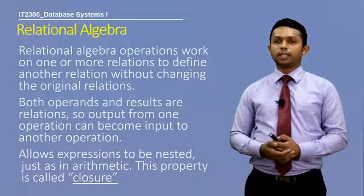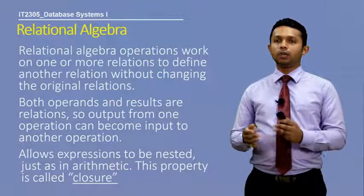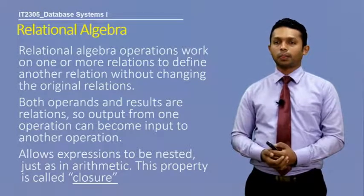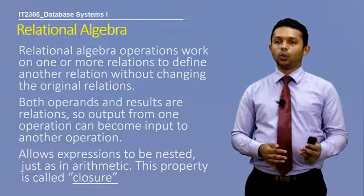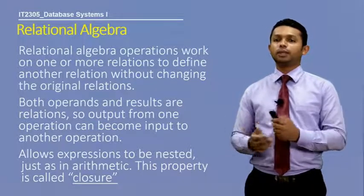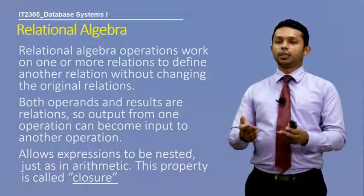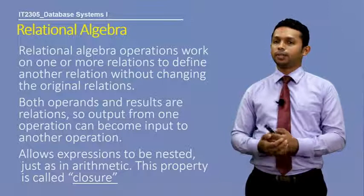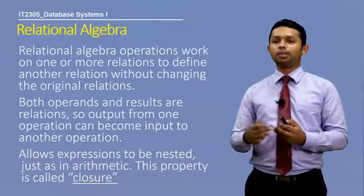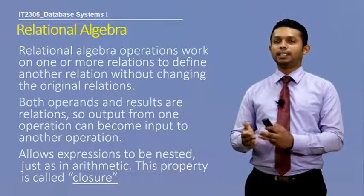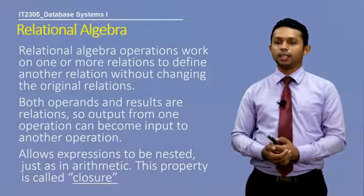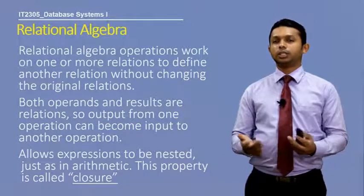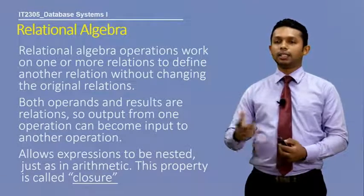Relational algebra operations work on one or more relations to define another relation without changing the original relations — a kind of independence. Both operands and results are relations, so the output from one operation can become the input to another. This also allows expressions to be nested just as in arithmetic. This property is called closure.